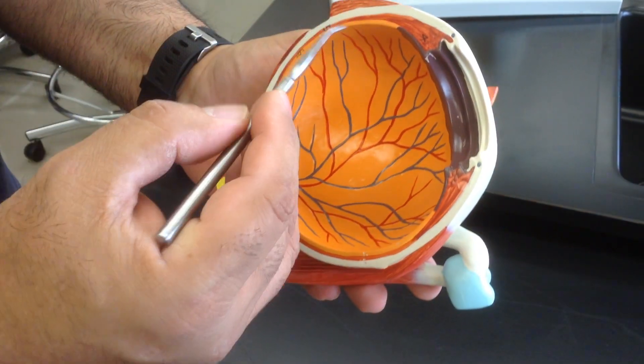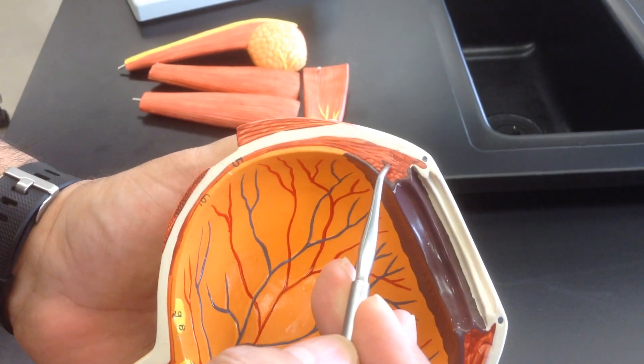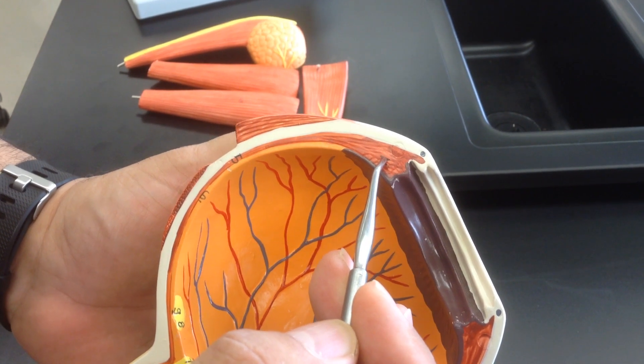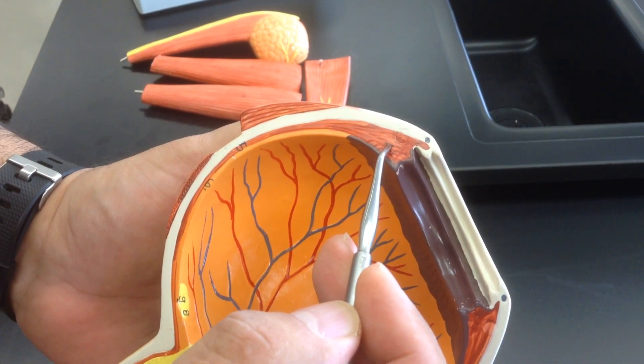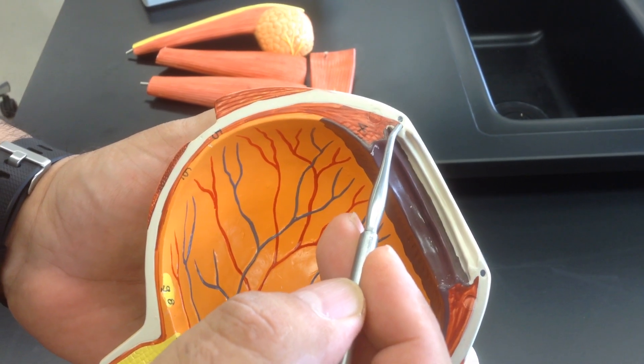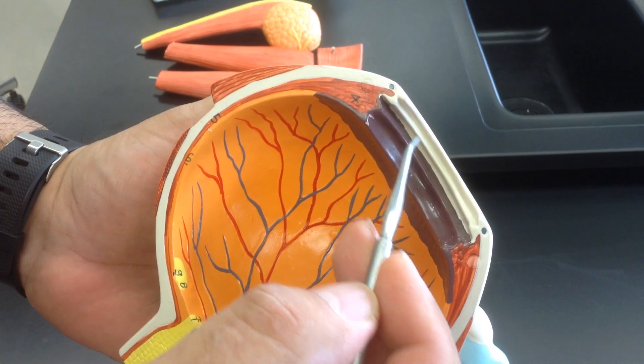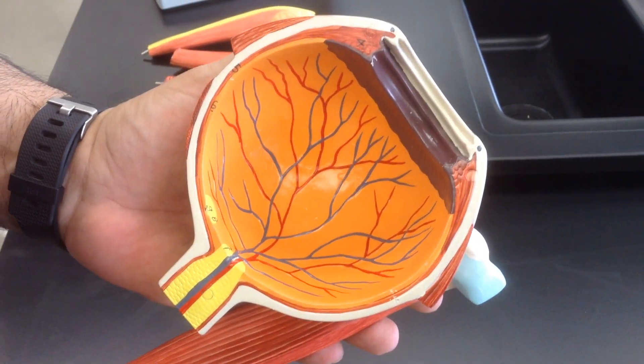The other thing is the part of the choroid that comes all the way from there is going to be ending in this part, which is known as the ciliary muscles. Ciliary muscles produce this extension known as the ciliary body, which ultimately will come a little bit forward and is going to be producing the iris part of the eye.